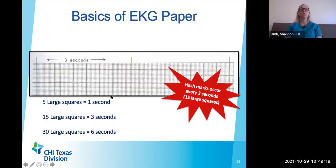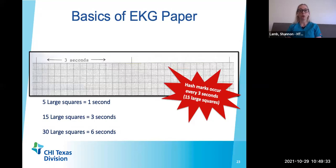Every hash mark on your strip shows three seconds of the strip. You'll always be looking at six-second strips on your exam, so when we start talking about how to measure the heart rate, it's important to understand that you're always looking at a six-second strip.